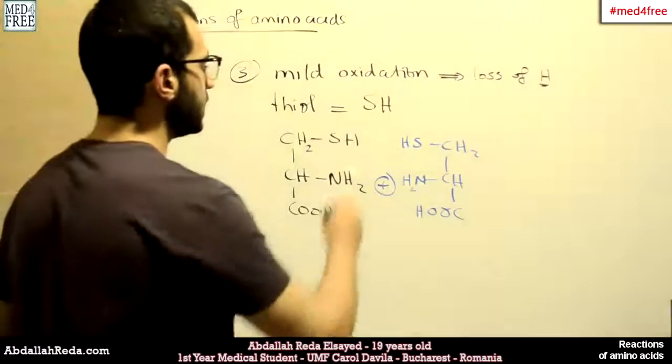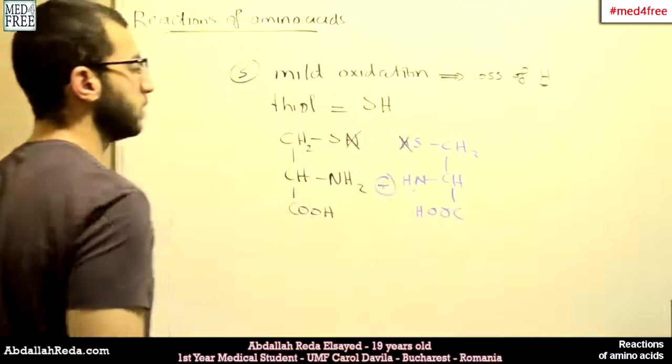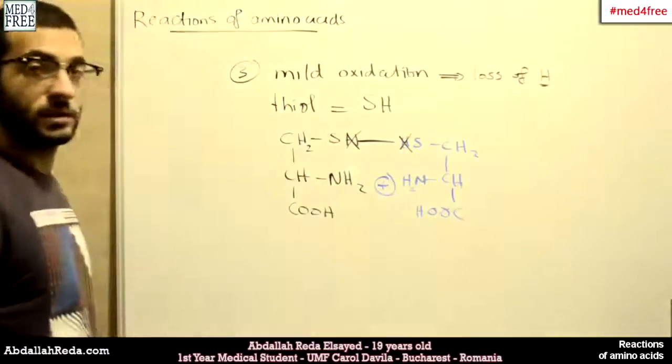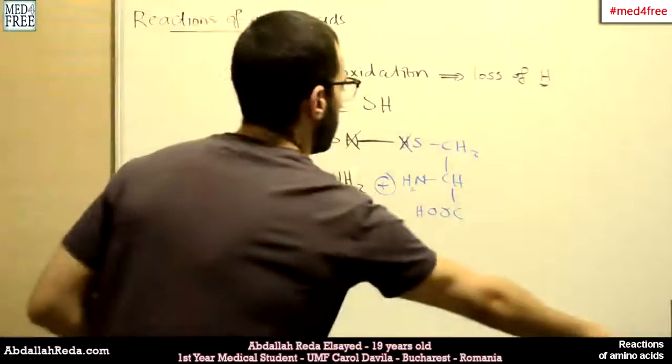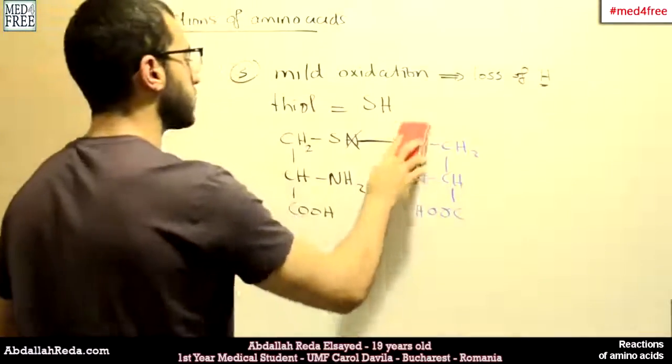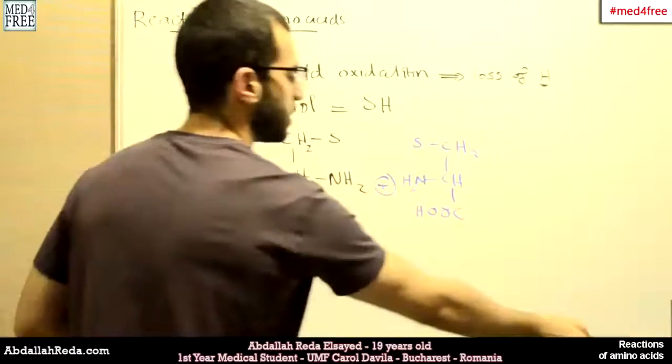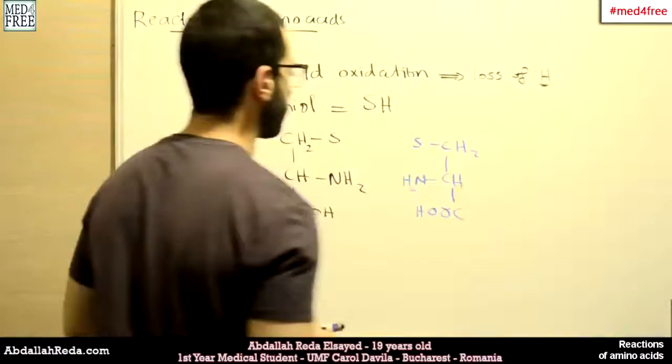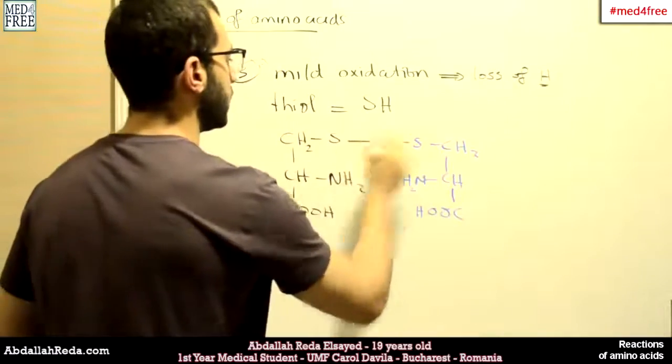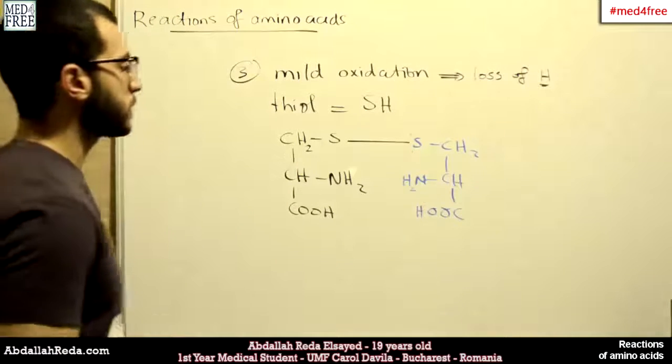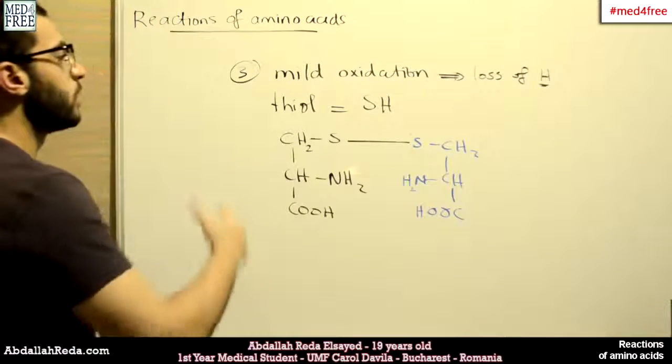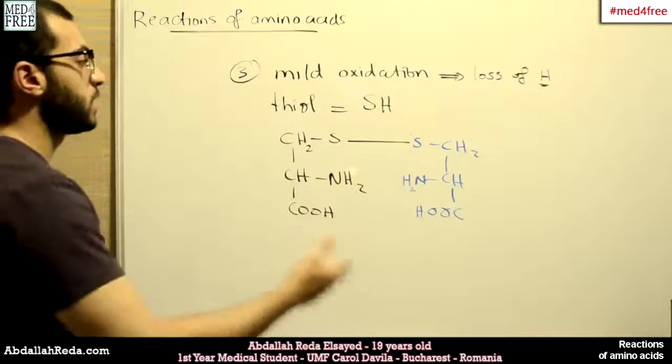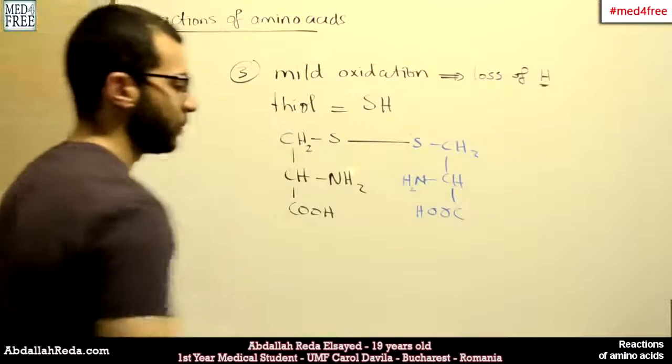What happens is these two hydrogens are actually lost. And a bridge is built between the two sulfur molecules, which is called a sulfur bridge. So this mild oxidation reaction will form a sulfur bridge between these two amino acid molecules. This is the third reaction, the mild oxidation, and it applies on amino acids with thiol groups.